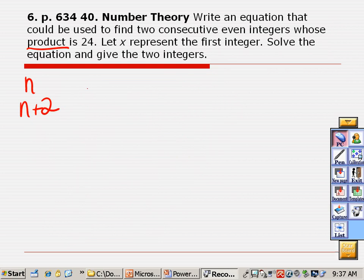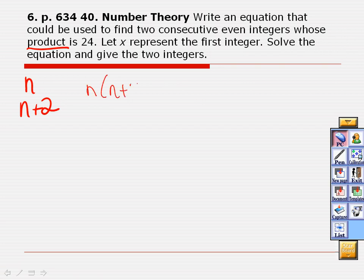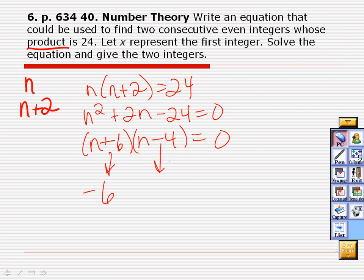All right, so we have n and n plus 2, which is consecutive even integers. If they were odd, you'd still do n plus 2 because what's the difference between two odd numbers? 2. What if it said consecutive integers? 1. Then it'd be 1. Okay, so I'm going to go n times n plus 2 is equal to 24. So that's n squared plus 2n. Do y'all take another step to do the 24 or do you just move it right now? Just move it? Yeah. I just usually go minus 24 equals 0. Then I need to factor, multiply to give me 24, add to give me 2, which is positive 6 and negative 4.